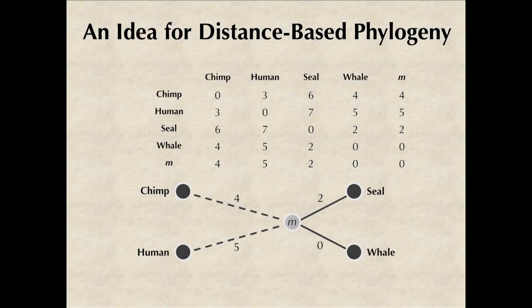Similar reasoning tells us that the distance from m to human, wherever human might be in the tree, is equal to 5.